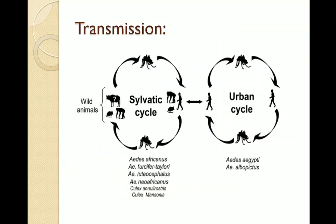Chikungunya is generally transmitted from mosquitoes to humans. Less common modes of transmission include vertical transmission — from mother to child during pregnancy or at the time of delivery. Transmission via infected blood products and through organ donation is also theoretically possible during outbreaks.